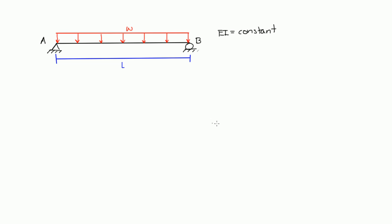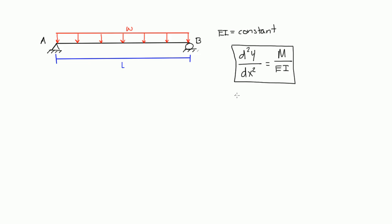Welcome to the first example for the double integration method. The double integration method requires using the formula d²y/dx² = M/EI. This equation is used for the double integration method, and along any span where the loads aren't changing, you can plug a moment equation for that span into this equation.